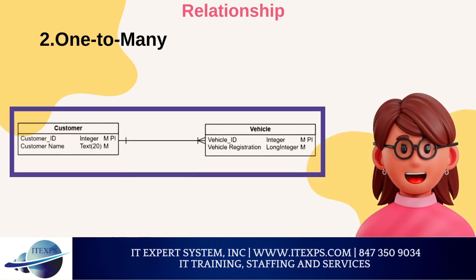One-to-many: A one-to-many relationship occurs when one instance of an entity can interact with multiple instances of another entity. For instance, one customer can hire several vehicles, while each vehicle can only be assigned to one customer at a time. In the crow's foot notation, a one-to-many relationship is represented by a single line at the end of the single instance, and a three-pronged crow's foot symbol facing the multiple instance rectangle.